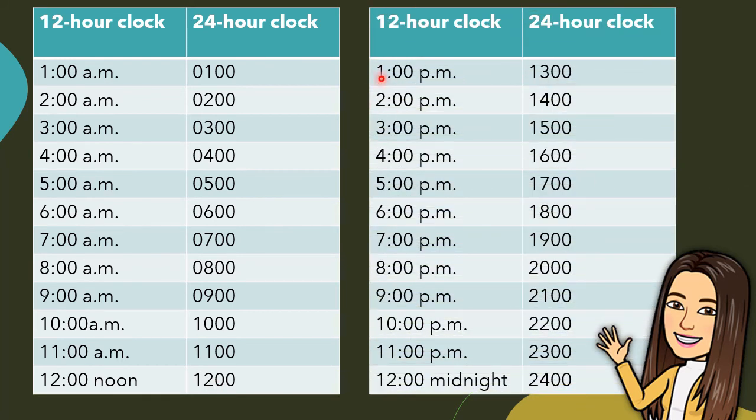How about p.m.? 1 p.m. is 1300. 2 p.m. is 1400. 3 p.m. is 1500. 4 p.m. is 1600. 5 p.m. is 1700. 6 p.m. is 1800.